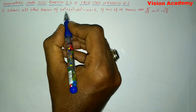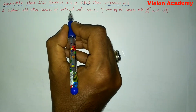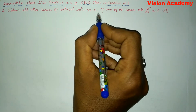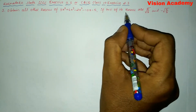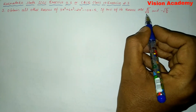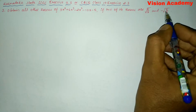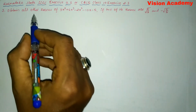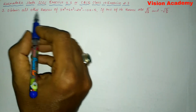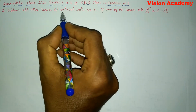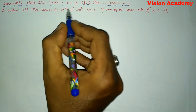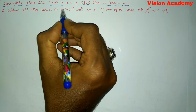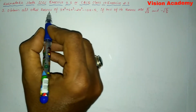3x⁴ + 6x³ − 2x² − 10x − 5, if two of its zeros are √(5/3) and −√(5/3). The number of zeros we can obtain is 4, because the polynomial's highest power is 4, so we are going to get a total of 4 zeros.